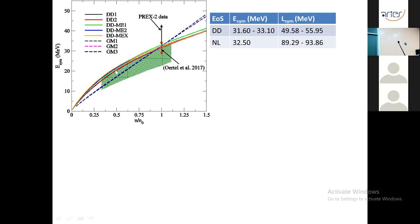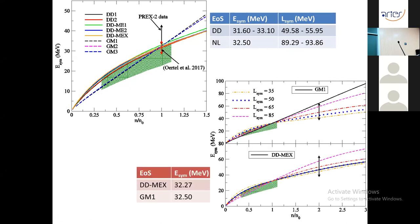Existing parameterizations reproduce e-sim at nuclear saturation density, but not all satisfy the range of e-sim at sub-nuclear densities. Existing non-linear parameterizations with high l-sim (89–93 MeV) satisfy the sub-nuclear density range, but the maximum existing value of l-sim is 86 MeV, making current equations of state not fully compatible with experimental data for e-sim. The density dependence of e-sim at sub-nuclear density is studied with different values of l-sim by tuning the nucleon-rho meson coupling parameters.